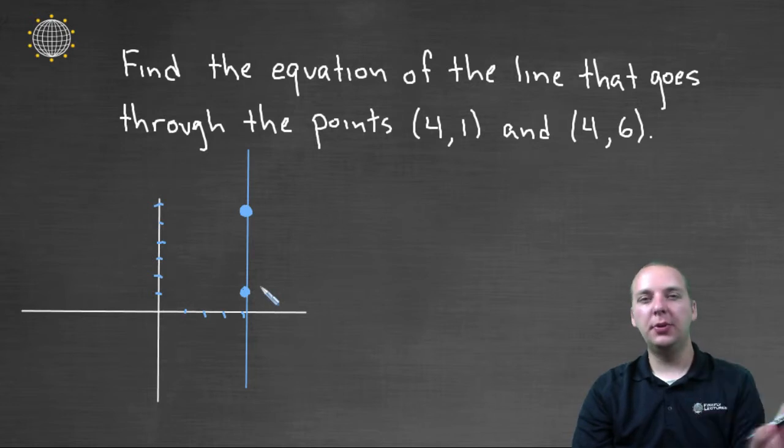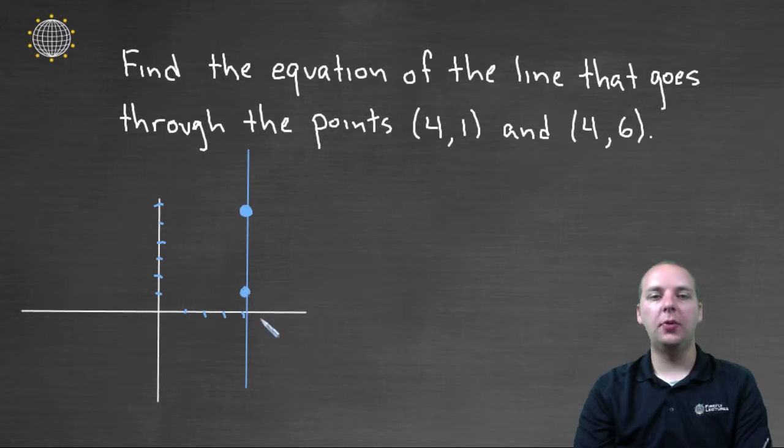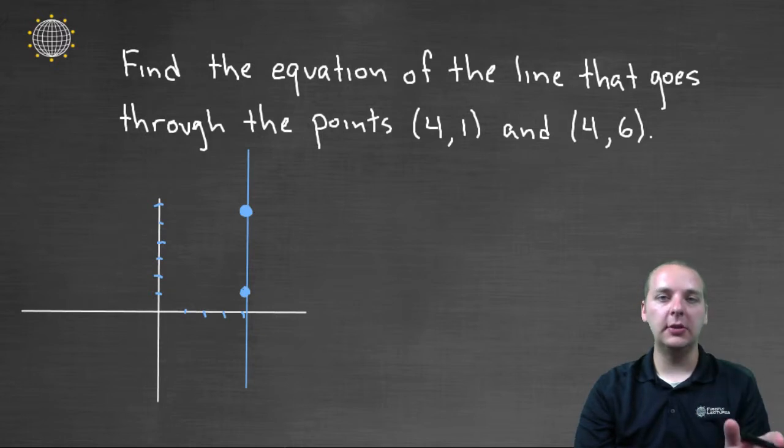But let's say we didn't know that, we'll just pretend that we didn't, we're not aware what this graph looks like. Let's see how the math would play out if we tried to find the slope and we tried to put it in either point slope form or y-intercept form or something like that. The first thing we would need no matter what form we're looking at, whether it be point slope or slope intercept, is we'll need the slope.